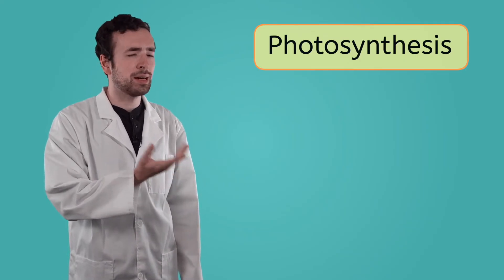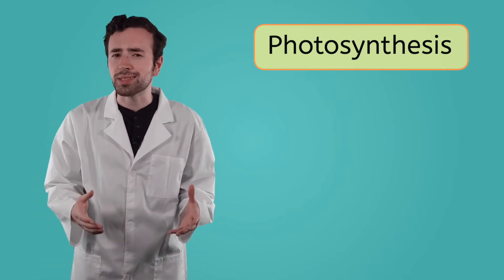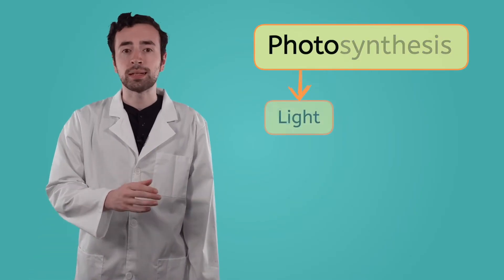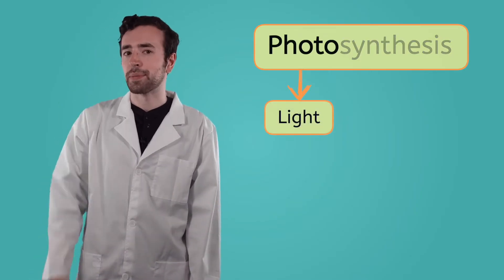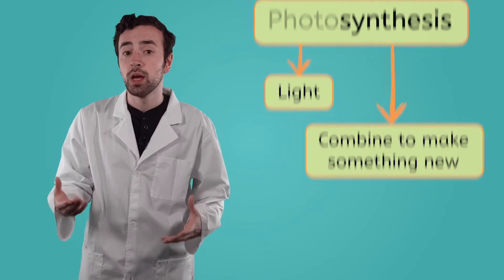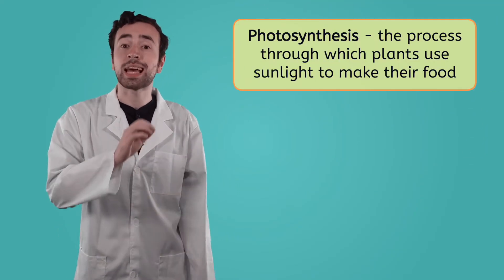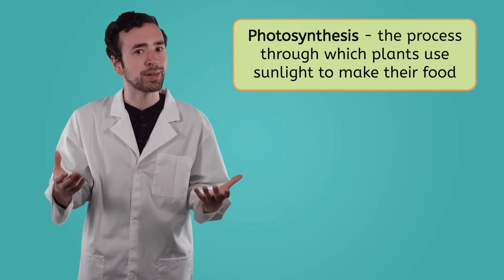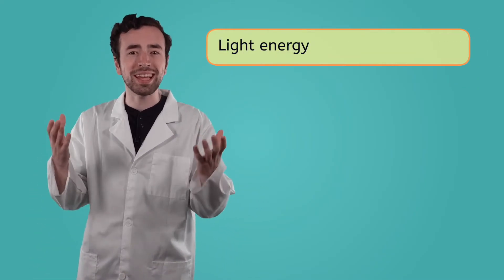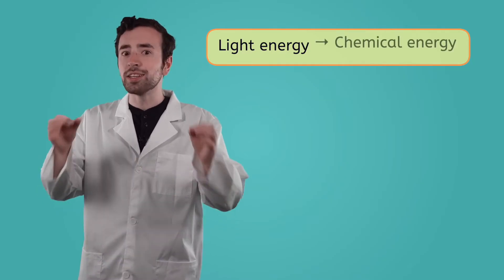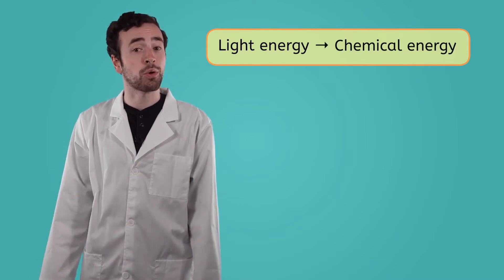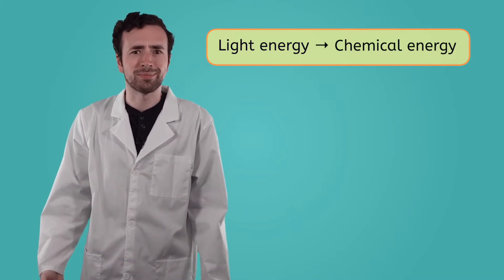That's a big word. But when we break it into pieces, the meaning of photosynthesis becomes clear. Photo means light, like the light from the sun. And synthesis means to combine things to make something new. So photosynthesis is how plants use sunlight to create something new. Their food. Photosynthesis allows plants to transform the light energy from the sun into chemical energy stored as their food. Plants can then use that energy to grow. But how do they do it?